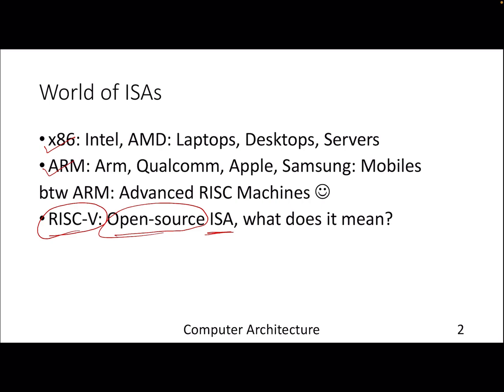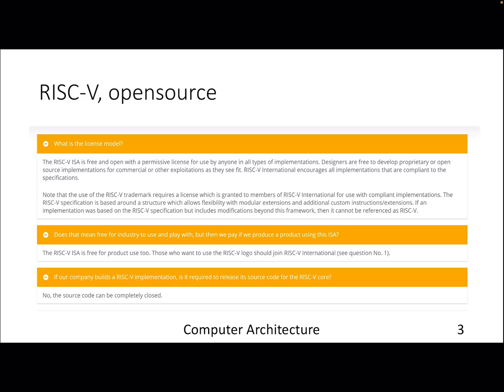Now what does it mean? We know open source software, but what exactly does it mean when I say open source ISA? So what it says is it's free and open with some permissive license, it can be used by anyone for all kinds of implementations, and it can be used for commercial use, so there is no kind of binding to any particular company for any particular ISA.